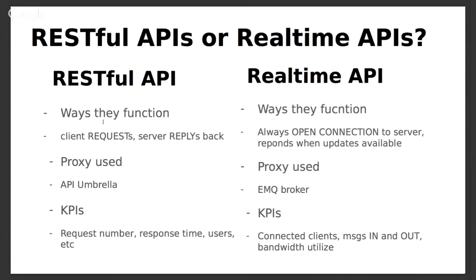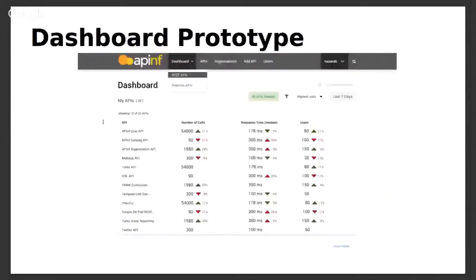The key performance indicators (KPIs) you get differ depending on the proxy. For example, from a RESTful proxy like API Umbrella you get one set of data, and from a broker like EMQ you get different data. From RESTful APIs you might get request numbers, response times, and users, while from a broker like EMQ you can get how many clients are actively connected, how many messages are going in and out, and the bandwidth utilization of each client.